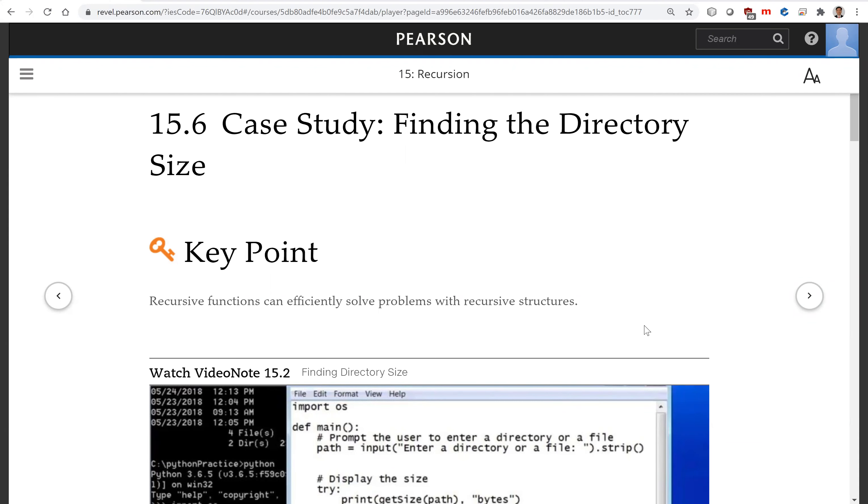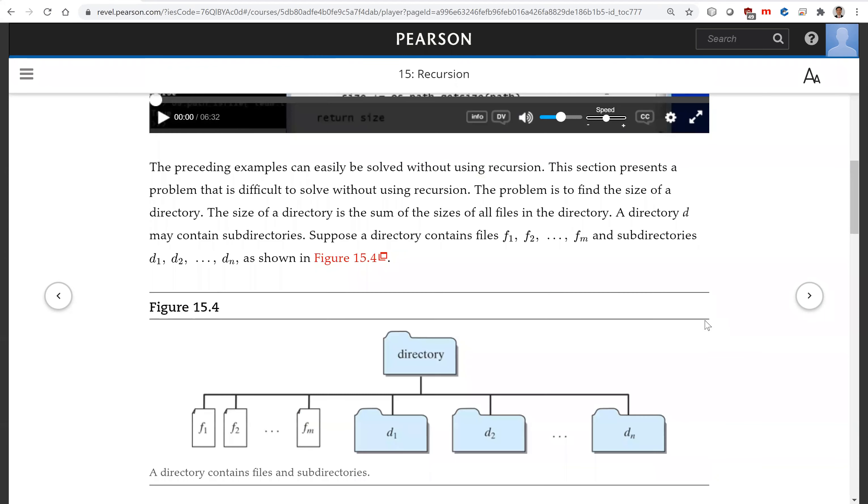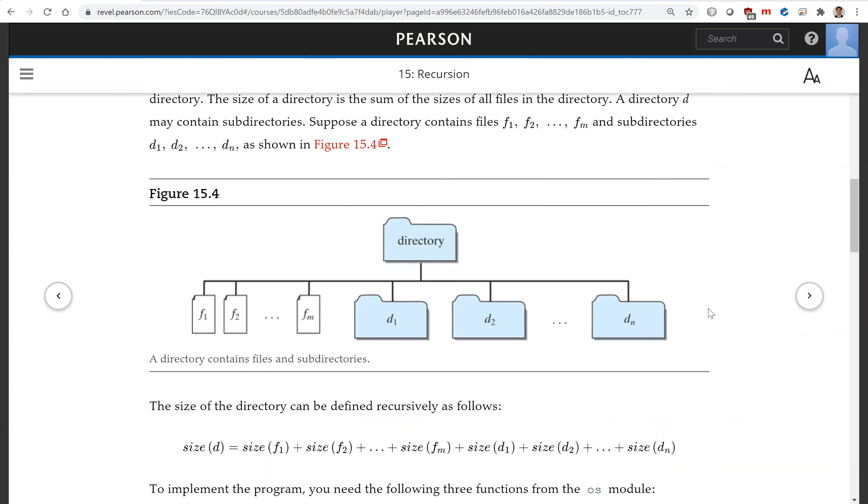Finding the directory size. This is the directory. We want to find the size. We're going to look at all the files under the directory, then all the subdirectories under the directory. For each subdirectory we'll do the same thing to find the size. We're going to add all the sizes together.